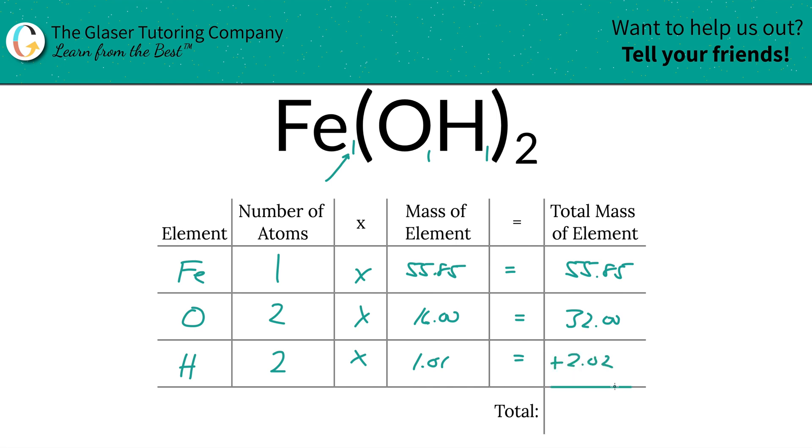And then to find the total mass of the compound, just simply add this column on up. So it's going to be 89.87. And since we're solving for molecular mass, the units here are in terms of AMU, aka atomic mass units.